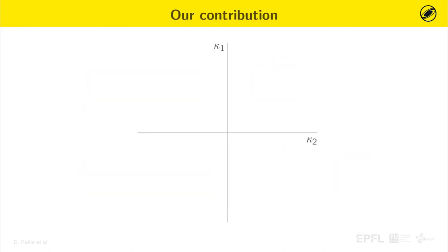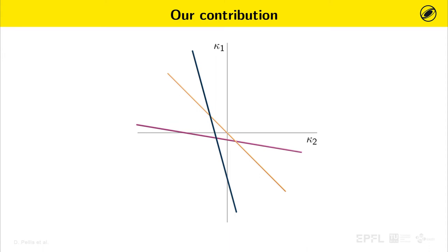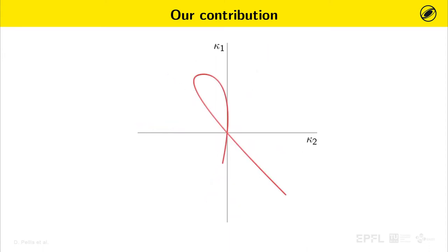It is currently possible to design Weingarten surfaces with a prescribed linear curvature relation. However, much less is known about Weingarten surfaces with more generic curvature relations, and design tools are currently missing. In this work, we provide the first tool for the computational design of Weingarten surfaces with a generic curvature relation, where the curvature relation is not prescribed but found as a result of an optimization.